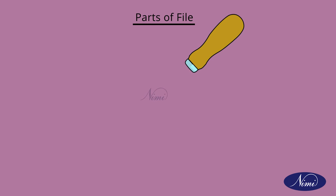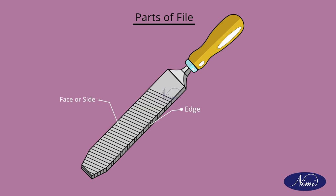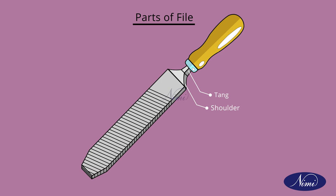Parts of a file: there are many parts available in a file, namely tip or point, face or side, edge, heel, shoulder, tang, handle, and ferrule.